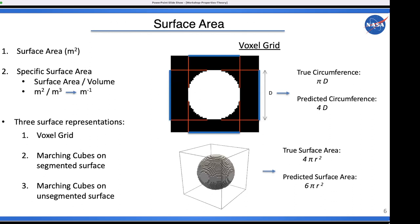Surface area is a little more complicated but still fairly straightforward. In the most naive way to calculate surface area, you take a voxel grid and simply count up all the exposed faces. You might think that as your domain size grows and features become well resolved, this error would average out — but it turns out it does not.